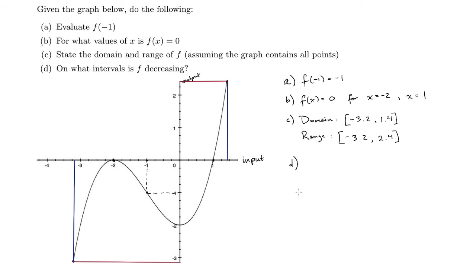Okay, and for part D, to find when our function is decreasing, we move from left to right along this curve. And from left to right, we're here, we're going up, so that's increasing. And then right at the peak, that's when we start to decrease. Kind of going downhill here. So that's decreasing right up until right there. And so we're decreasing, starting at negative 2, and then ending right there at this input value, which is 0.